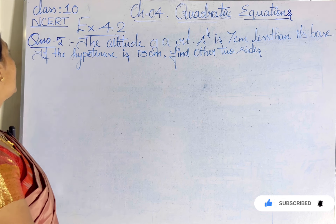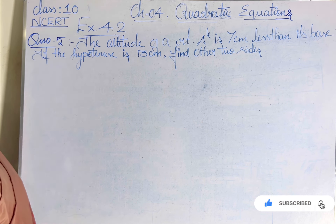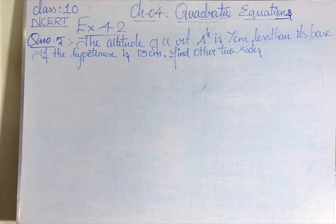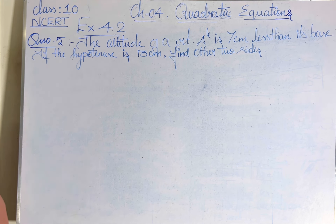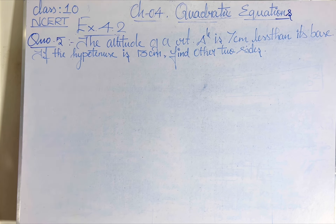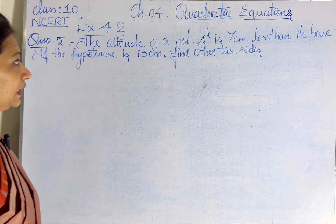Today's section is about Class 10 NCERT Chapter No. 4, Quadratic Equations, Exercise No. 4.2, Question No. 5: The altitude of a right triangle is 7 cm less than its base. If the hypotenuse is 13 cm, find the other two sides.